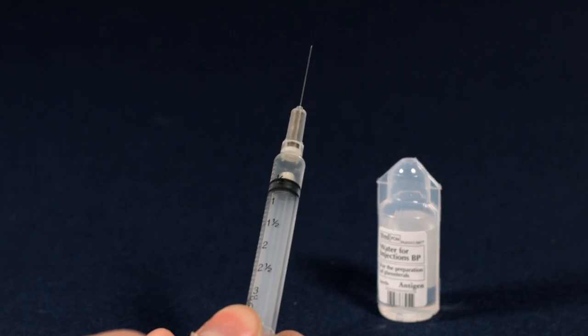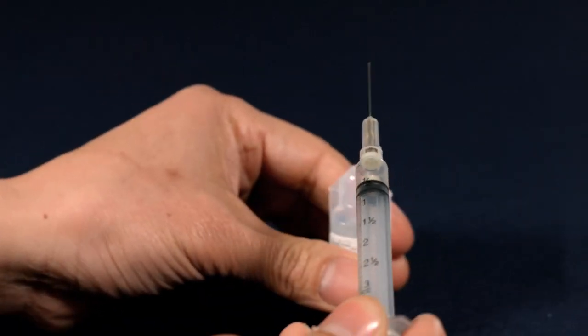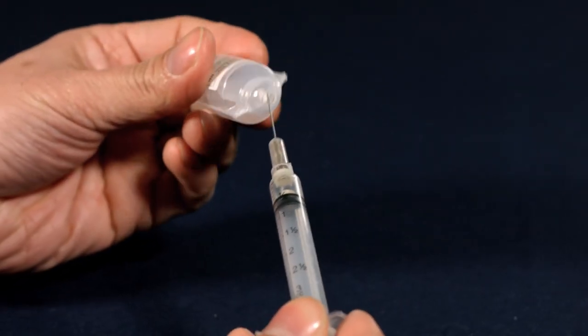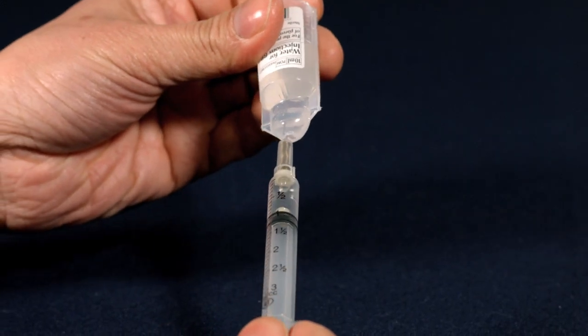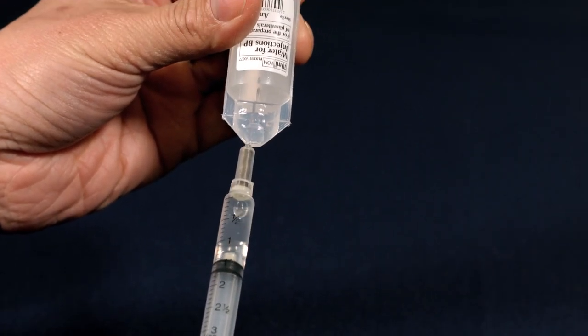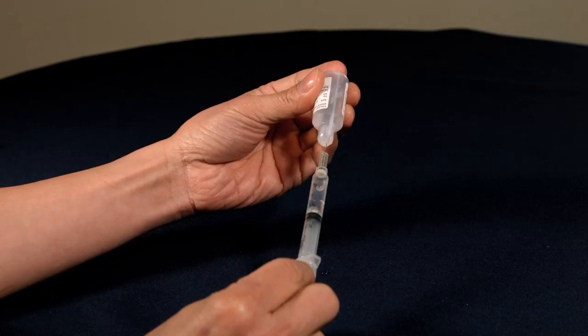Uncap the syringe, put the needle into the water vial, and slowly draw up between one and two milliliters of liquid by pulling back the plunger.